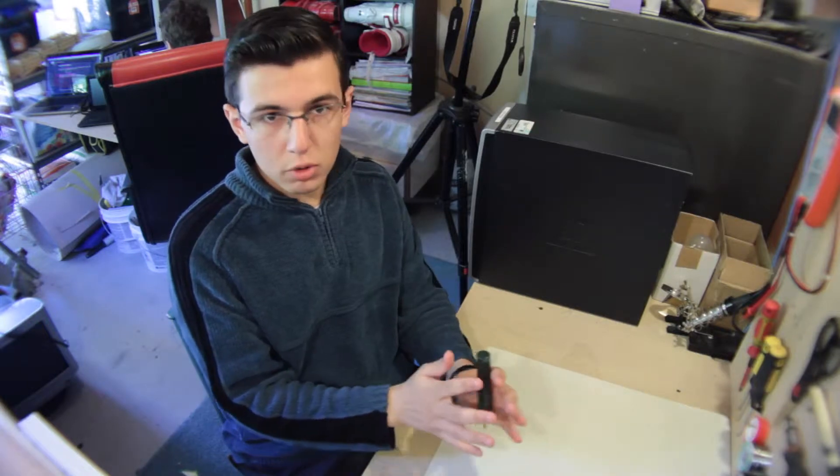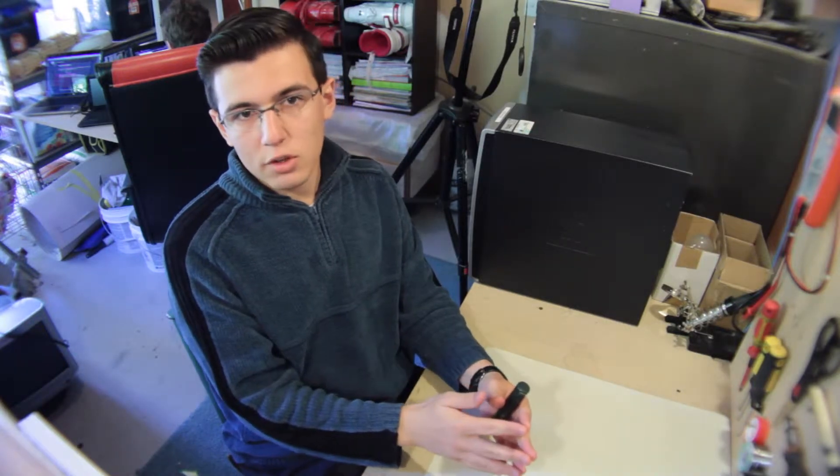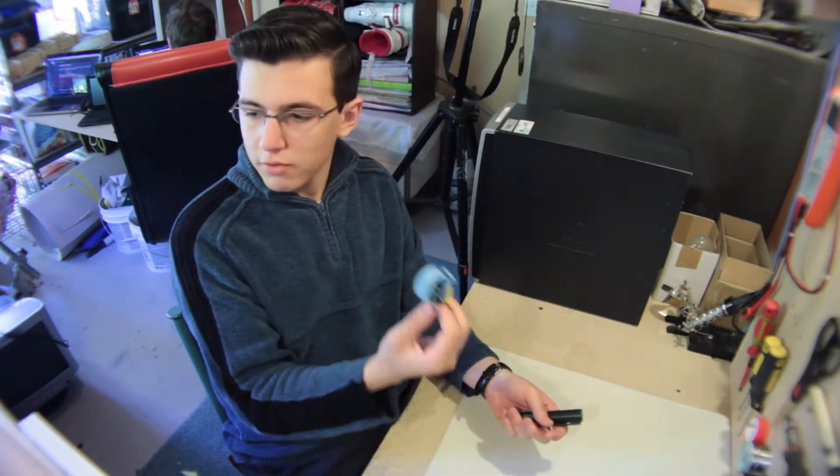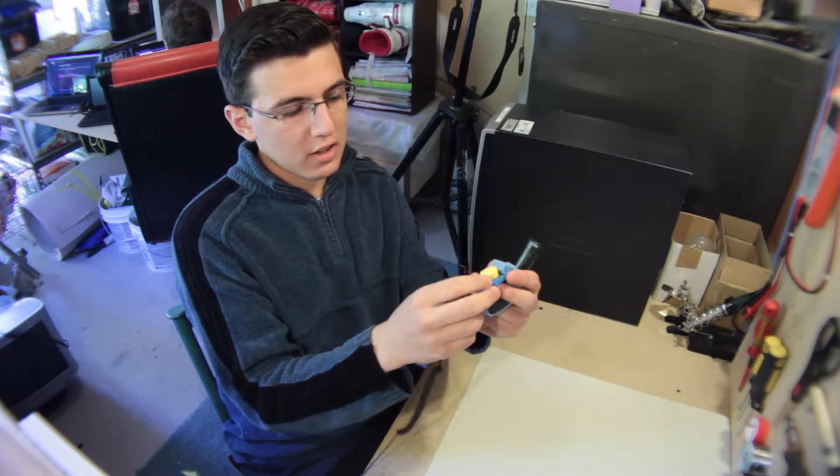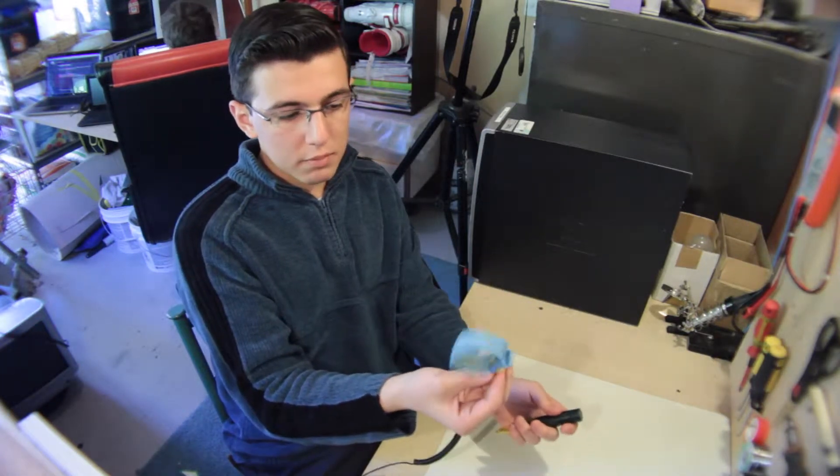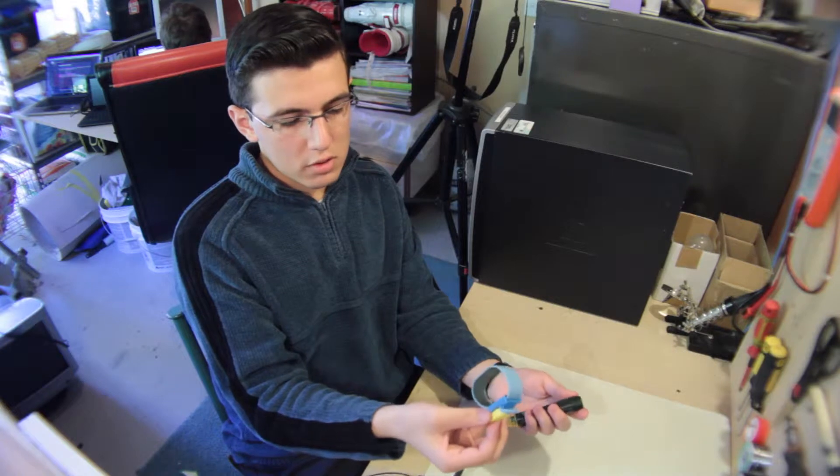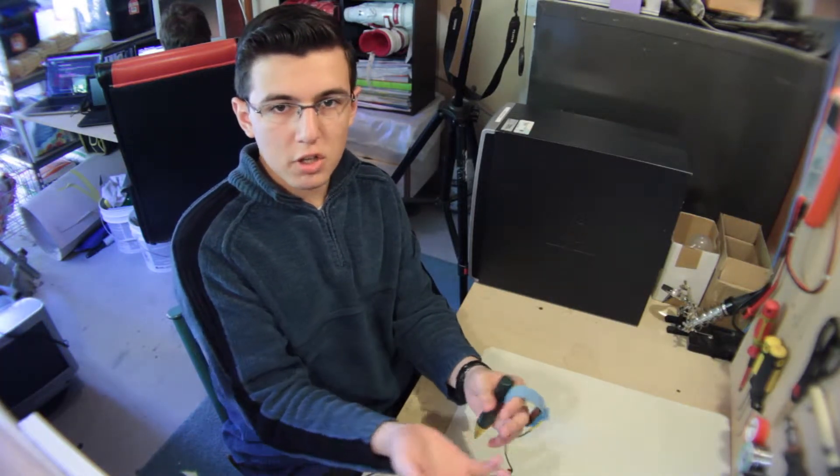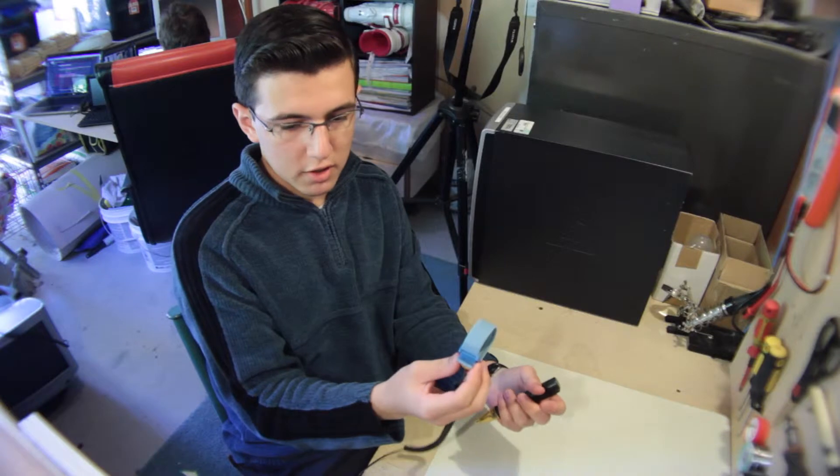So first things first, you want to protect it from static electricity. So what we have here is a static wristband. Basically what this does is it allows for any current that you have on yourself, any energy that you have on you, to be discharged via this.